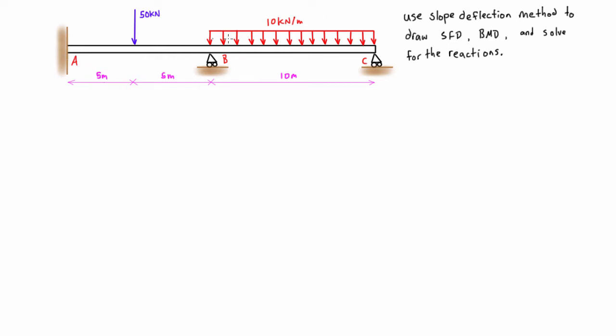So here, when we load the structure, we know that the slope and displacement at A is going to be zero because of the rigid connection. We know that the displacement at B and the displacement at C is going to be zero, but we don't know what those slopes are going to be.